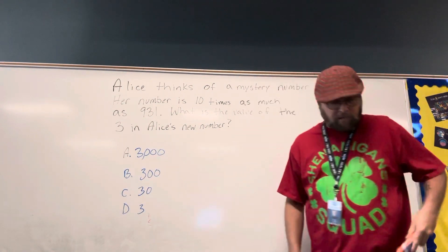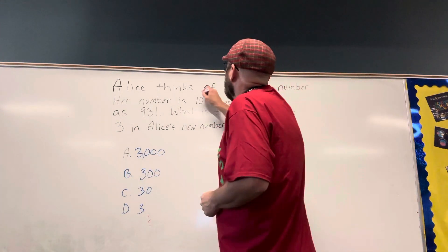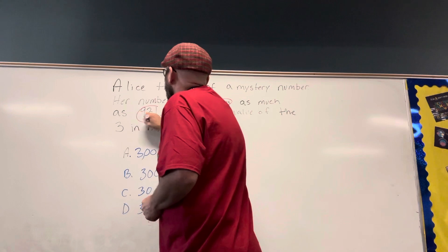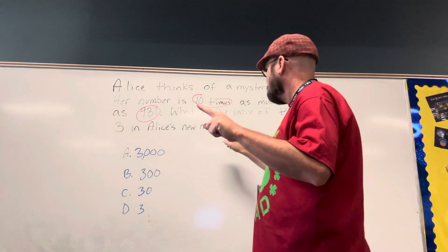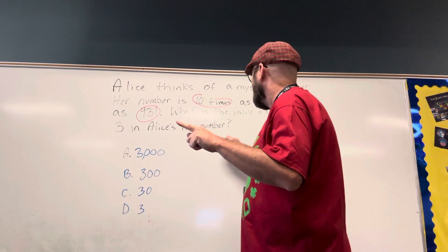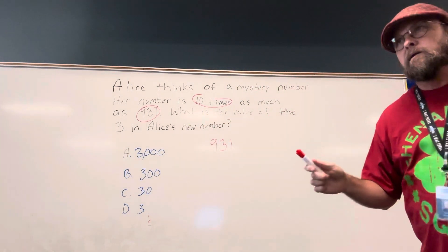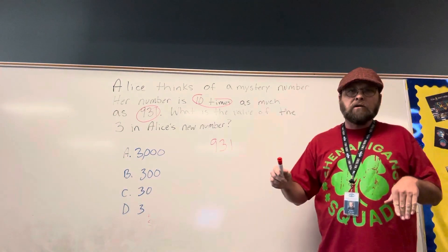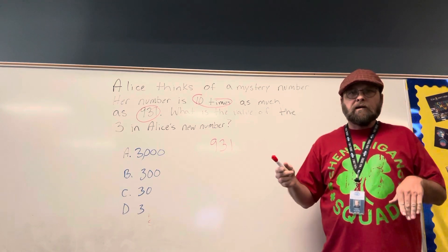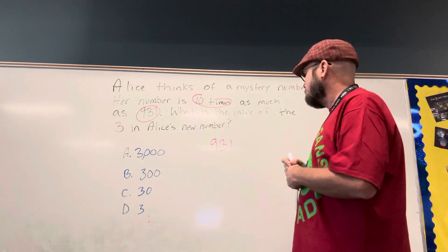Well, fairly easy telling us what to do. We're doing ten times of 931. Now, I'm going to talk through this a little bit differently because I know in the past you have learned just to put a zero in the back. While that works with a whole number, as a decimal, it's not done the same way. So we need to understand place value as we're looking at decimals.